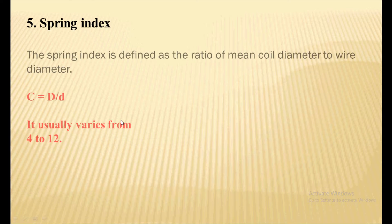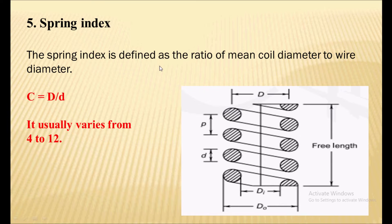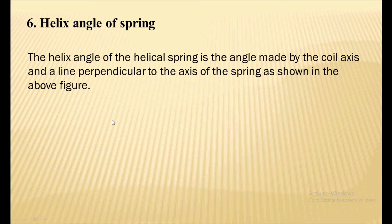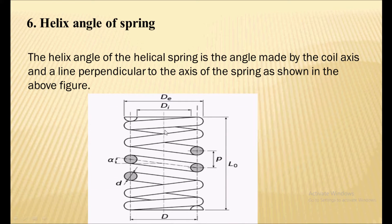The next term is the spring index, which is a very important term in spring terminology. Spring index is defined as the ratio of the mean coil diameter (capital D) to the wire diameter (small d). The spring index may vary from 4 to 20, and it indicates the sharpness of curvature of the coil.